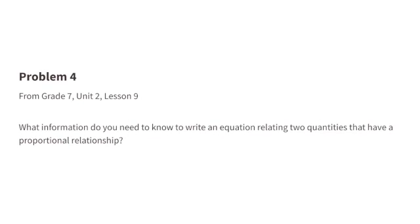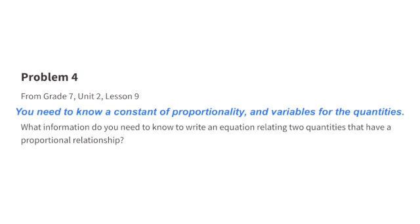Problem number 4 from 7th grade, Unit 2, Lesson 9. What information do you need to know to write an equation relating two quantities that have a proportional relationship? You need to know a constant of proportionality and variables for the quantities.